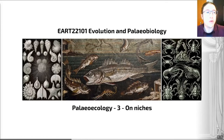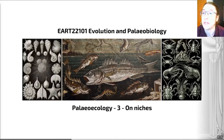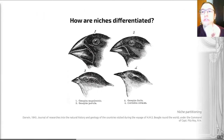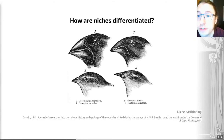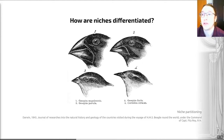Hello everyone, welcome to video 3 of Paleoecology, where we're going to be talking about niches — in particular how niches can be differentiated, or are differentiated, by animals. The key question here is: how are niches differentiated? Niches are differentiated by something called niche partitioning. This can occur within ecosystems in a number of ways, and over the course of this video I'm going to explore some of the different ways in which organisms and animals differentiate their niches.